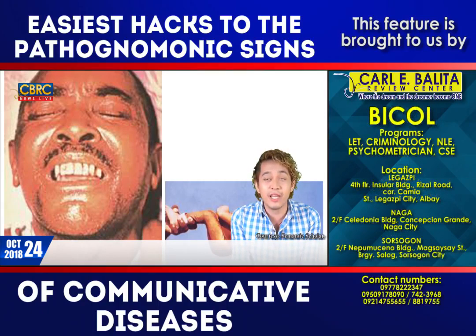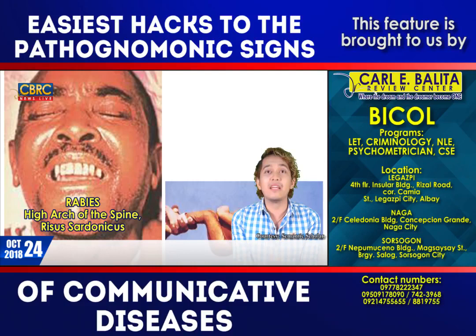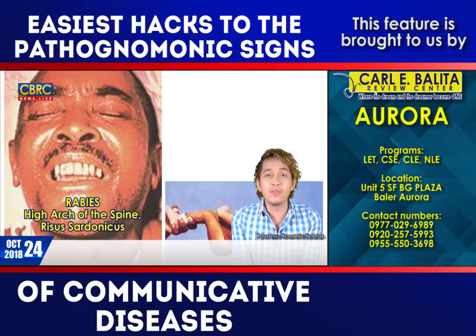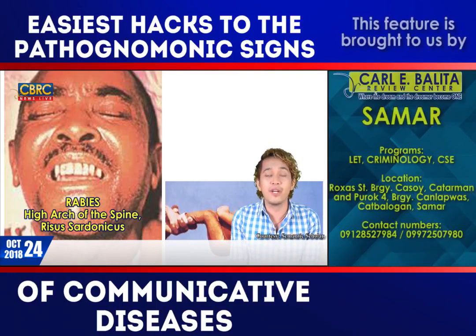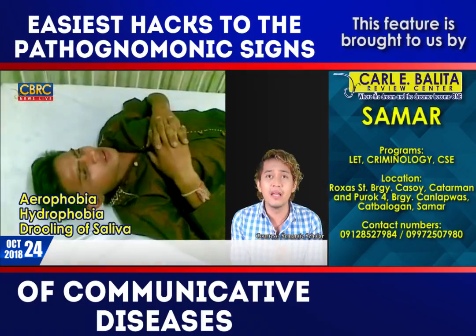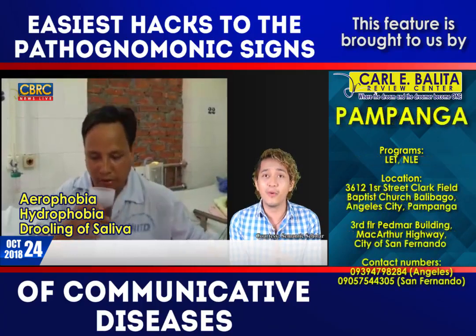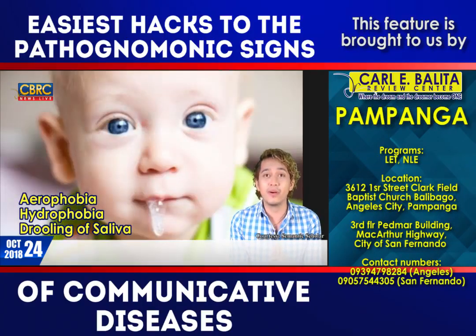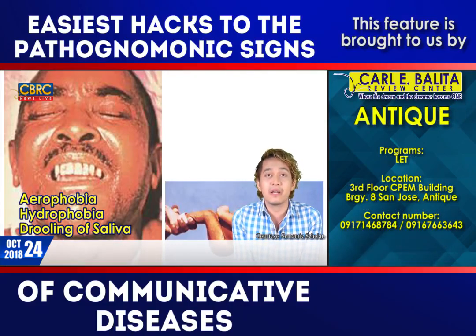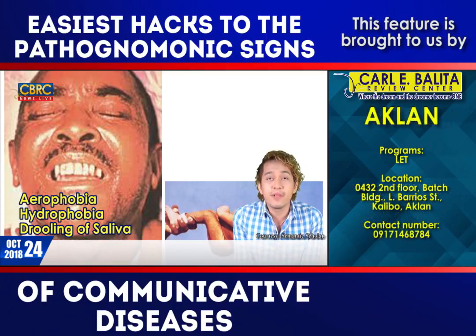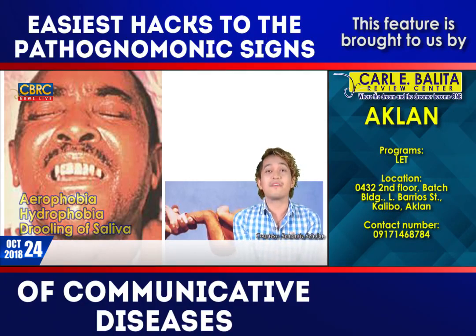Rabies is one of the most fatal diseases — it is 100% fatal, meaning no person who develops rabies has survived. The pathognomonic signs of rabies include aerophobia, hydrophobia, and drooling of saliva. Once any of these signs appear, the patient will die. Post-exposure vaccination must be given immediately before symptoms develop.